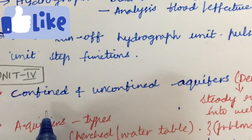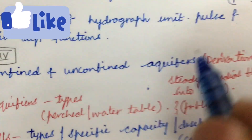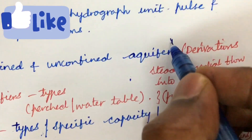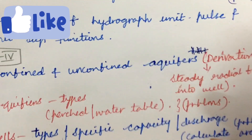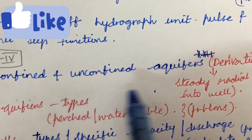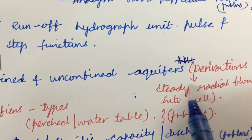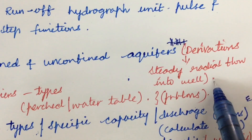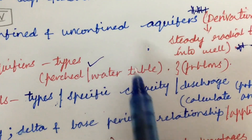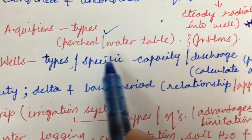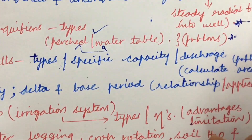We can expect one or one and a half questions from Unit 4, which is all about aquifers — problems, derivations, or types related to aquifers. Confined and unconfined aquifers, and derivations related to steady radial flow into wells, are asked several times. The differences between aquifer types may also be asked, along with problems related to them.